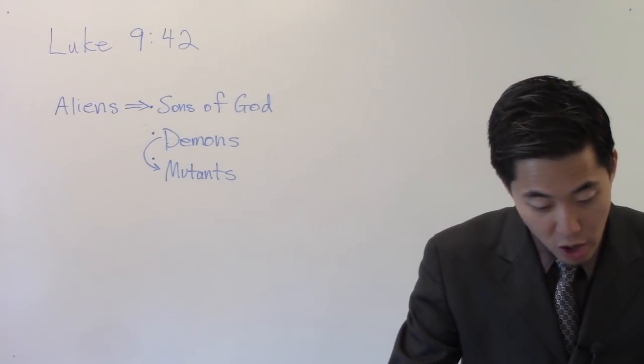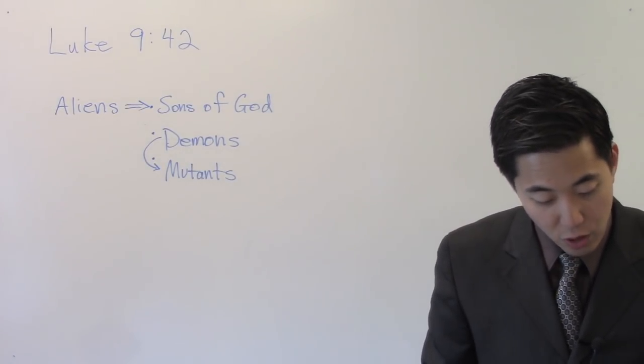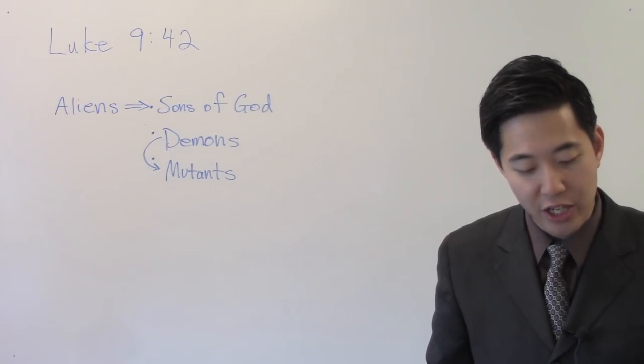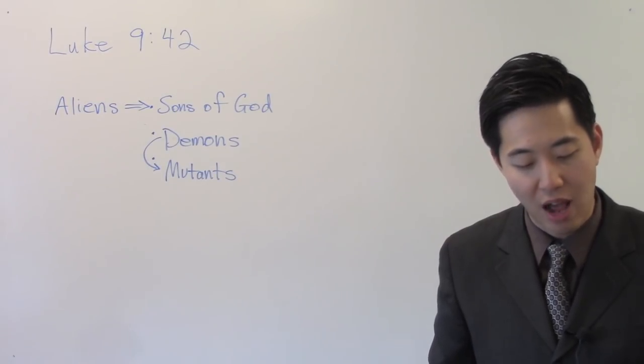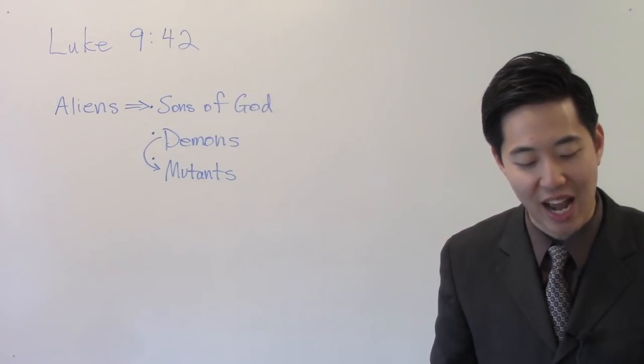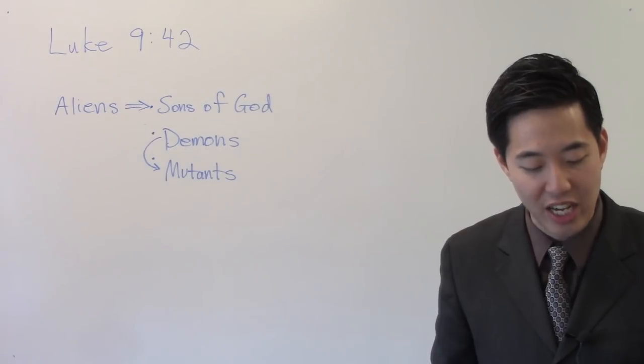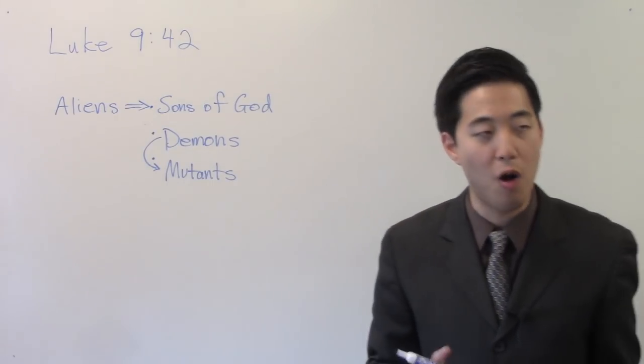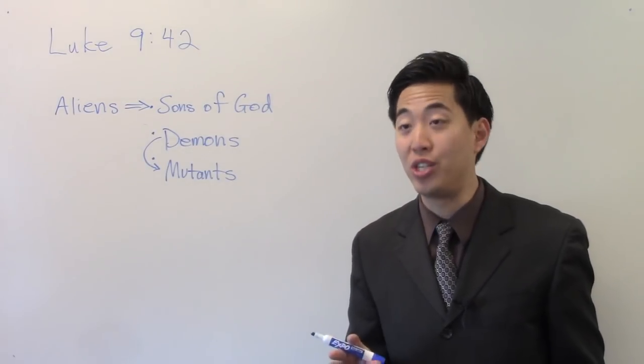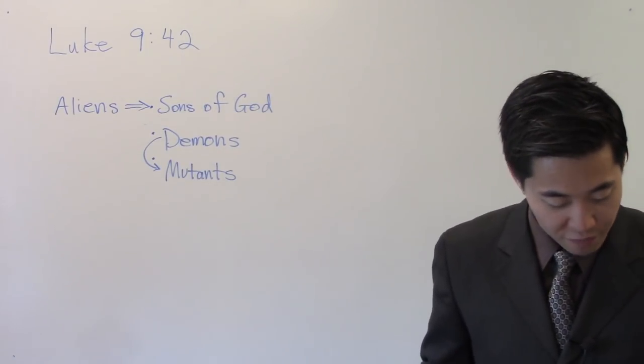We're going to look at Mark chapter 5. Look at verse 8. For he said unto him, Come out of the man, thou unclean spirit. So see, this demon, this devil is inside this man. And he asked him, What is thy name? And he answered, My name is Legion, for we are many. That's thousands, thousands inside that person.